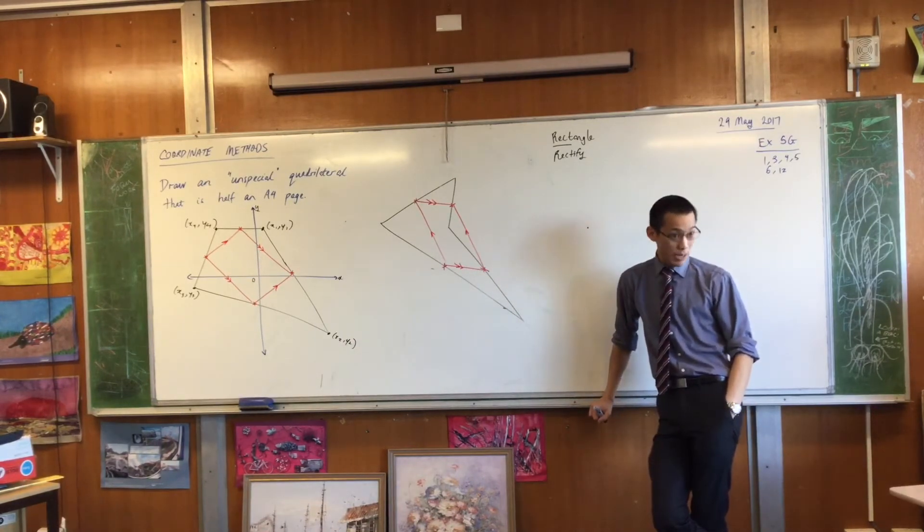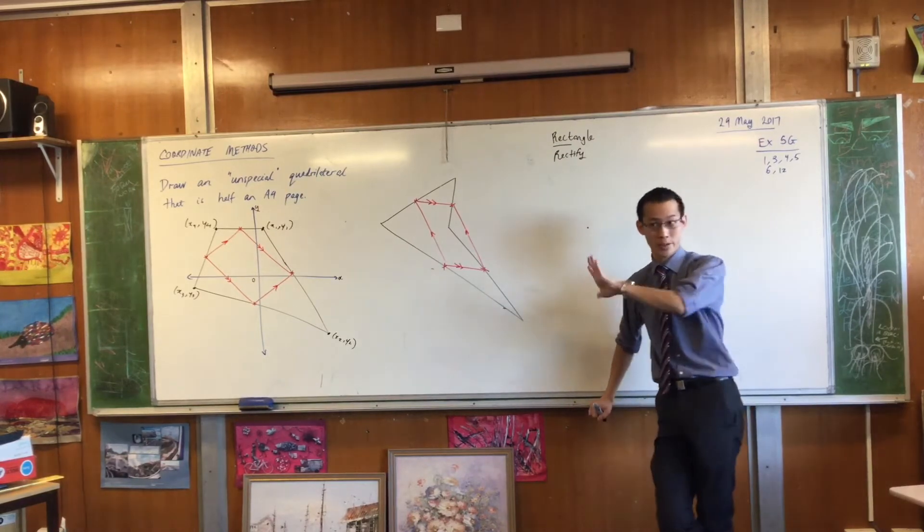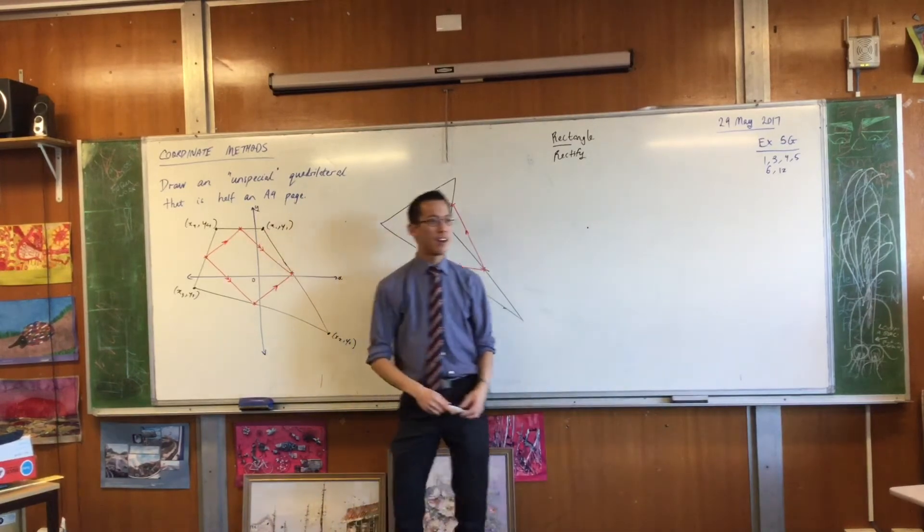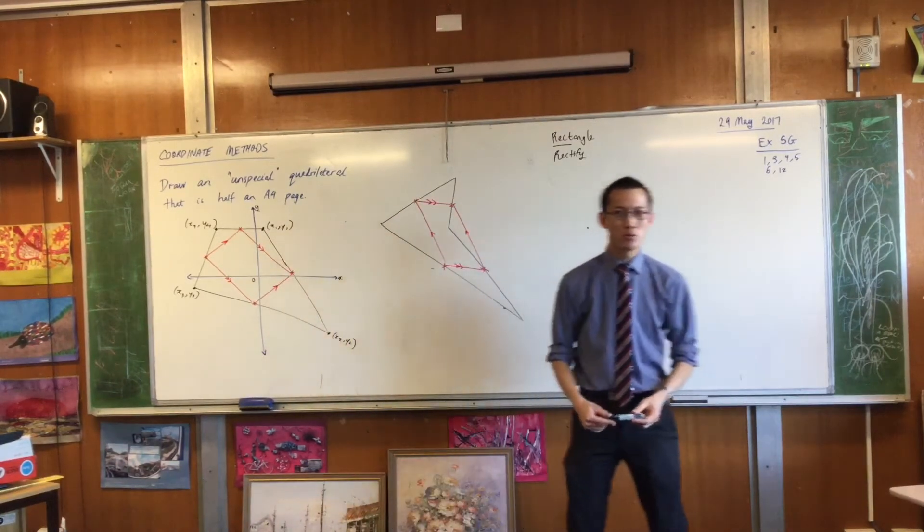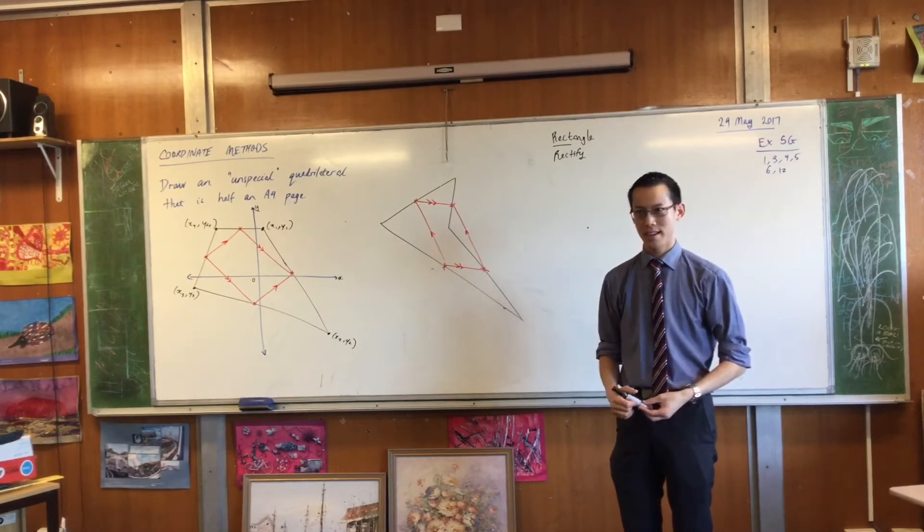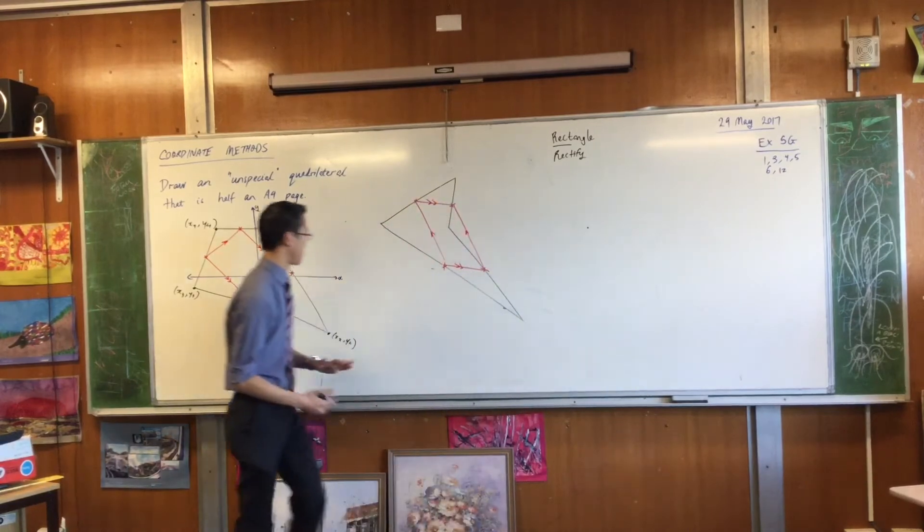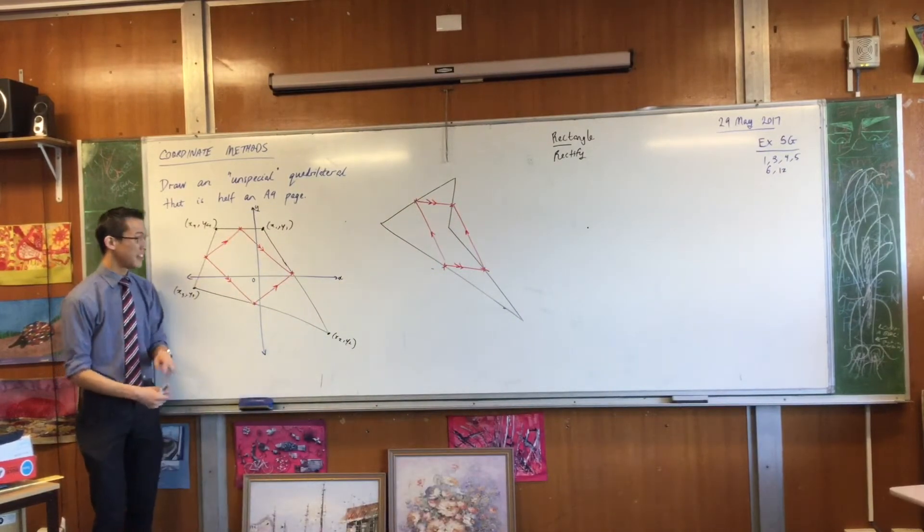We created midpoints, didn't we? We bisected every side of the quadrilateral, and then that gave us new coordinates. Now, to bisect, you find the midpoint. Well, you guys know how to find midpoints, don't you? Now, I'm going to give you one more clue. I'm going to give you one more clue, which is more of a question than anything else.